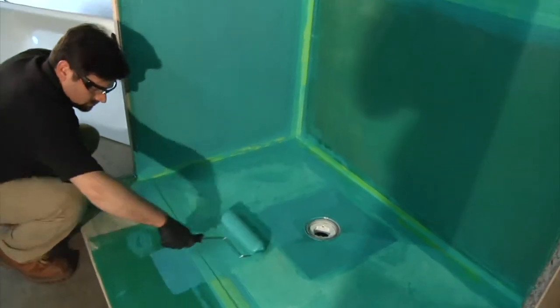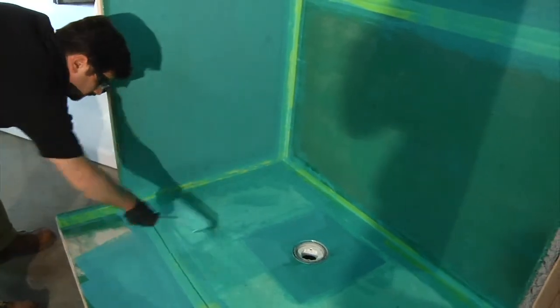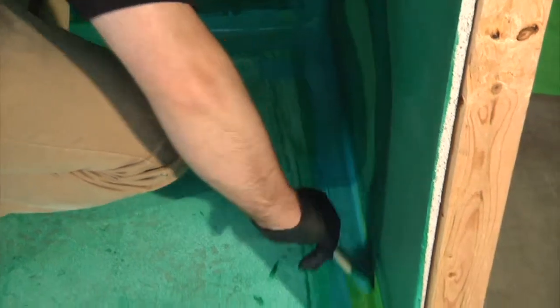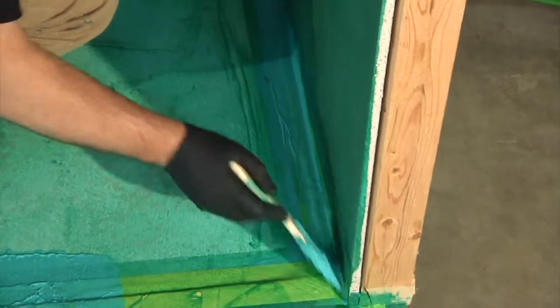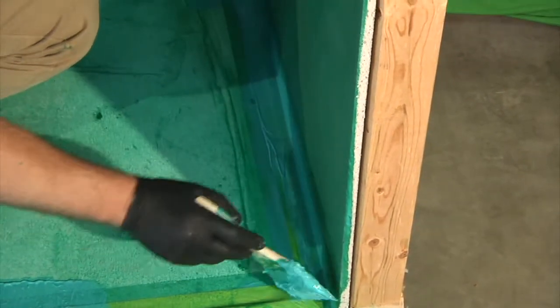Make sure no one walks in the area or disturbs it in any way. Dust can ruin the first coat's ability to bond cleanly with the second coat. Adding the second coat achieves the 40mm thickness the manufacturer requires to make the waterproofing complete.